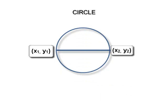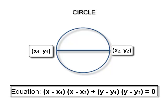If (x₁, y₁) and (x₂, y₂) are the end points of a diameter of a circle, then the equation of the circle is (x − x₁)(x − x₂) + (y − y₁)(y − y₂) = 0.